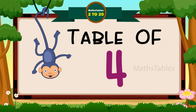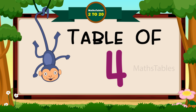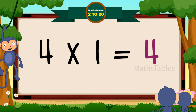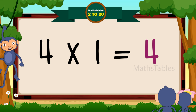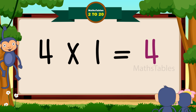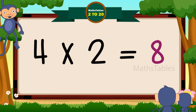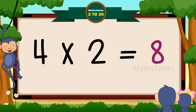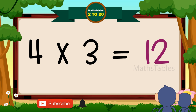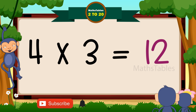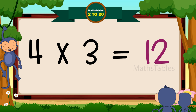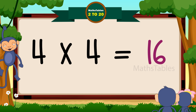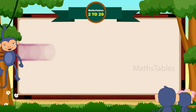Hi friends! Now we will learn the table of four. Four ones are four. Four ones are four. Four twos are eight. Four twos are eight. Four threes are twelve. Four threes are twelve. Four fours are sixteen.